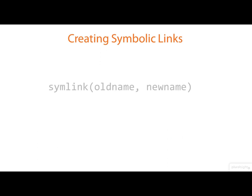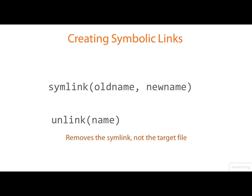The system call to create a symbolic link is symlink. It needs the existing name and the new name. This is what lies behind the command-line ln -s for creating symbolic links, which you're probably familiar with. Removing a symbolic link is done with unlink, the same way you remove a regular hard link — and it's the symlink that's removed, not the target file.